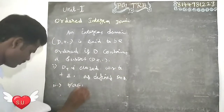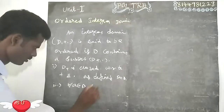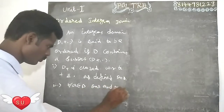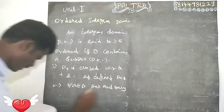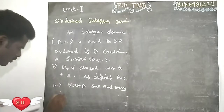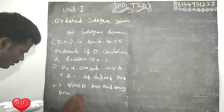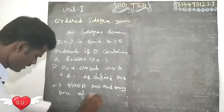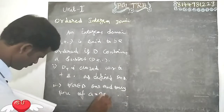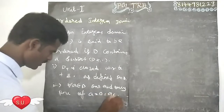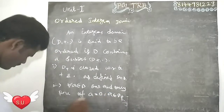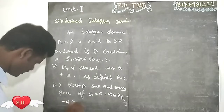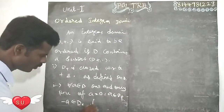The second condition: for every a belonging to D, one and only one of the following holds — a equals 0, a belongs to D+, or minus a belongs to D+.